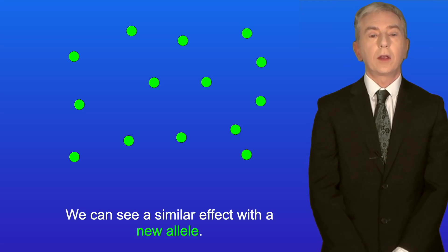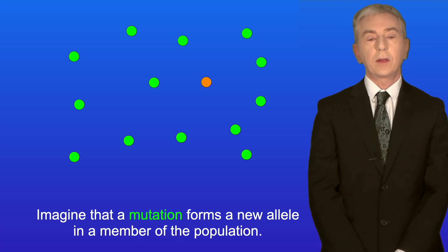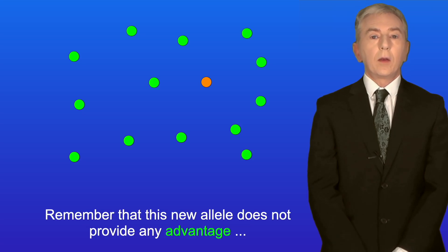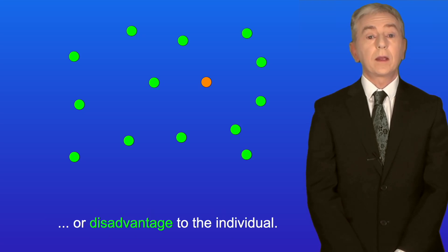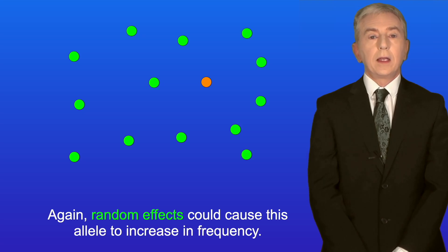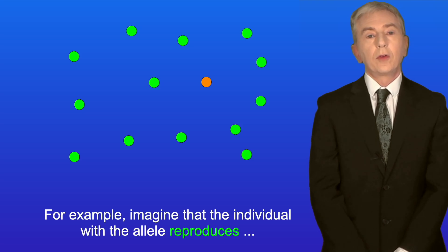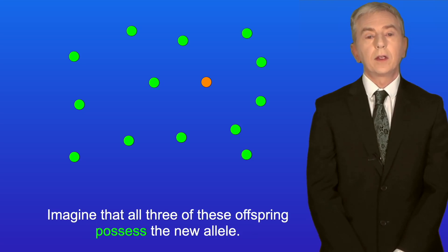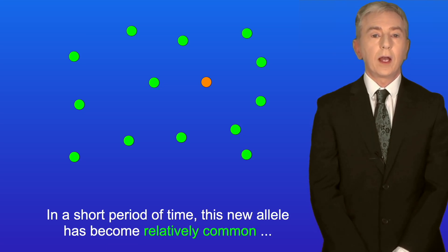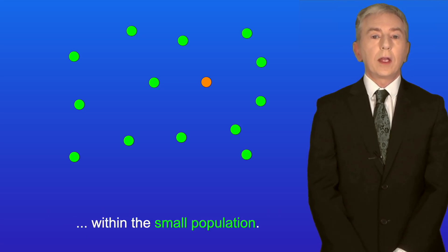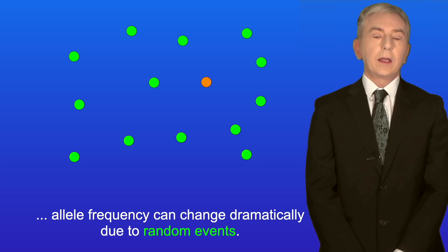We can see a similar effect with a new allele. Imagine a mutation forms a new allele in a member of the population — shown here in orange — and remember this new allele does not provide any advantage or disadvantage. Random effects could cause this allele to increase in frequency. For example, if the individual with the allele reproduces and leads to three offspring, all possessing the new allele, in a short period of time this new allele has become relatively common within the small population.